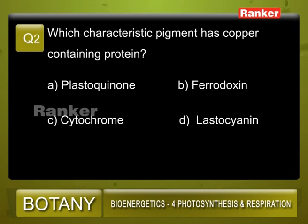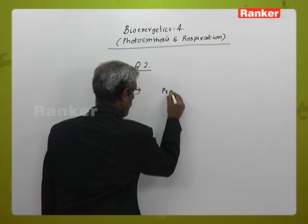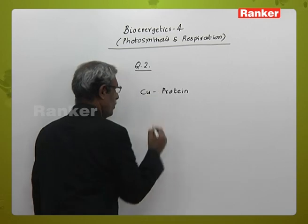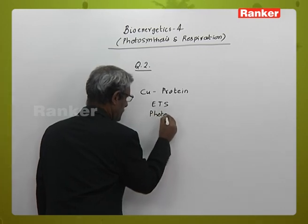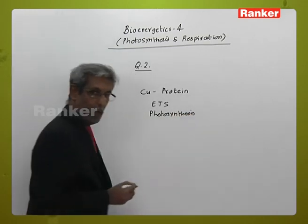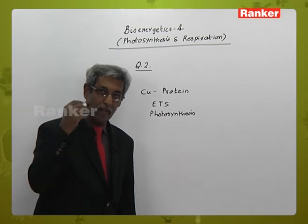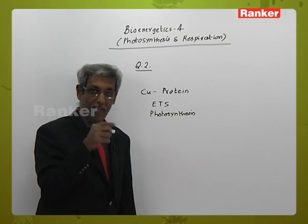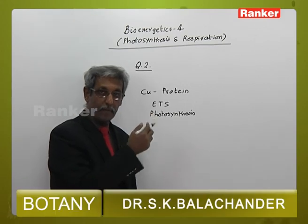Question number 2: Which characteristic pigment has a copper-containing protein? A: Plastoquinone, B: Ferredoxin, C: Cytochrome, D: Plastocyanin. The question asks which protein contains copper — a copper-containing protein which is a component of the electron transport system in photosynthesis. Plastoquinone is an initial acceptor of electrons after the photolysis of water. Ferredoxin is a component of photosystem I; when Ferredoxin takes an electron, it is helpful in the reduction of NADH to NADPH2.